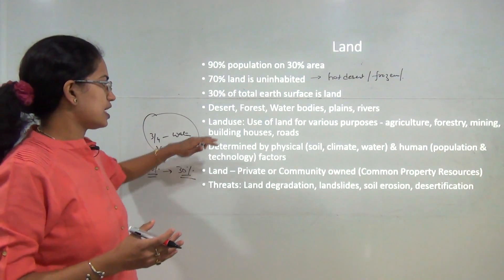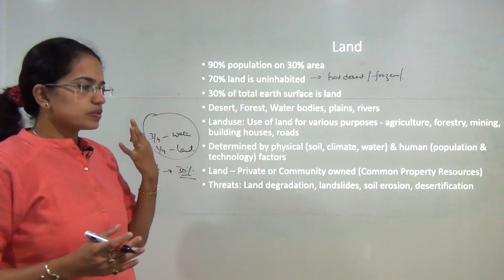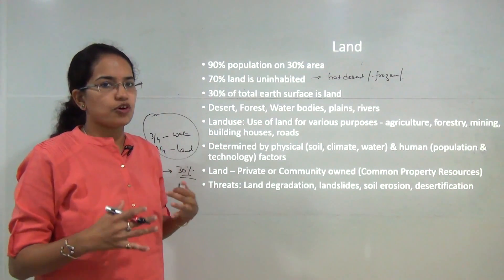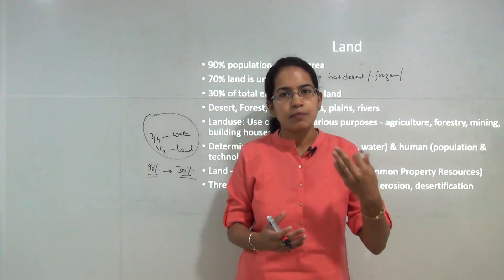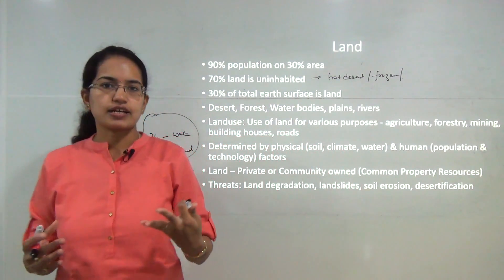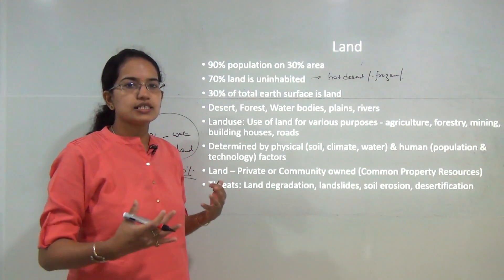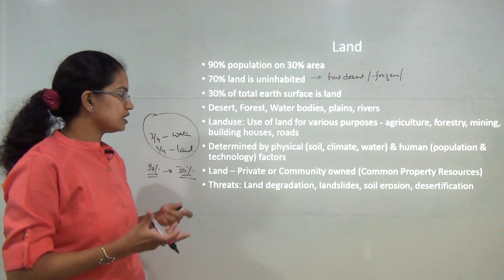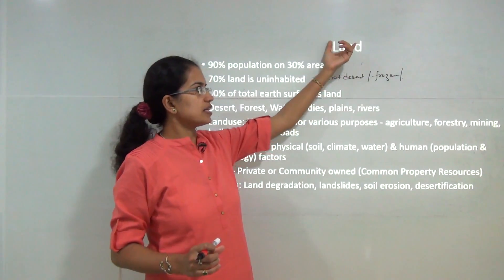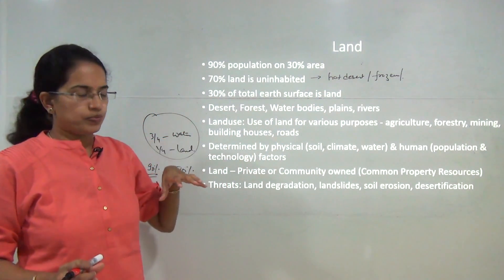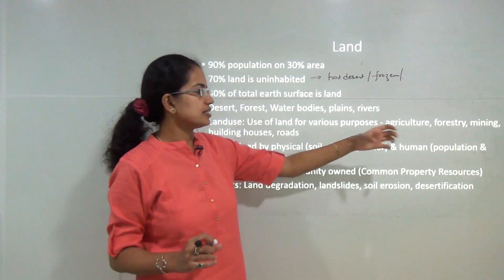The basic areas under land resources include deserts, forests, water bodies, plains, and rivers. Land is used for various purposes: agriculture, mining, industrial activities, forestry, roads, houses, and transportation. Various factors determine the quality and use of land, which we can classify as physical factors or human factors.